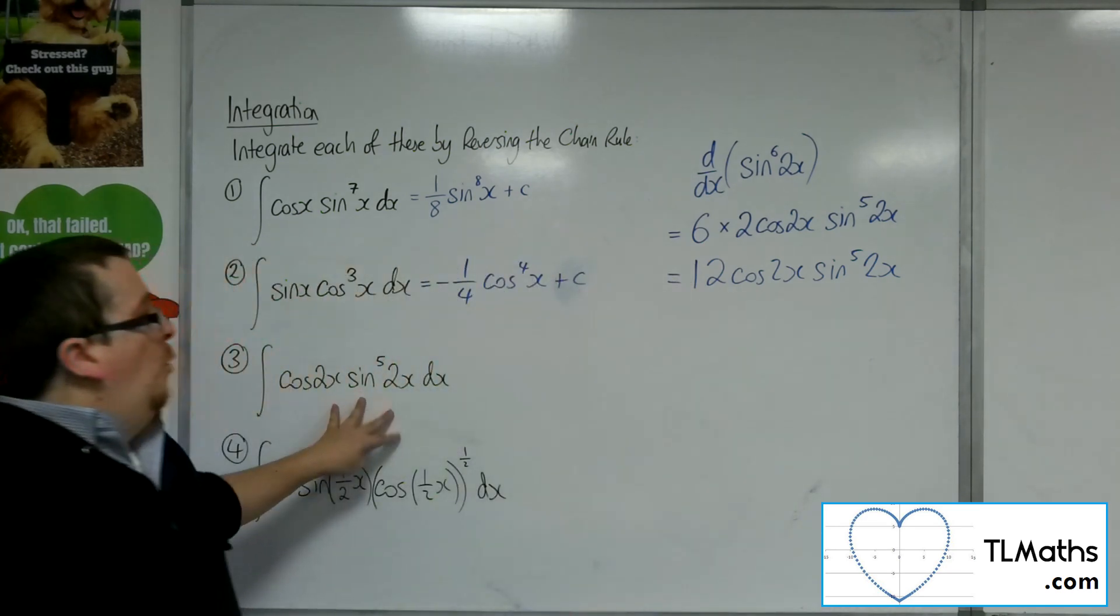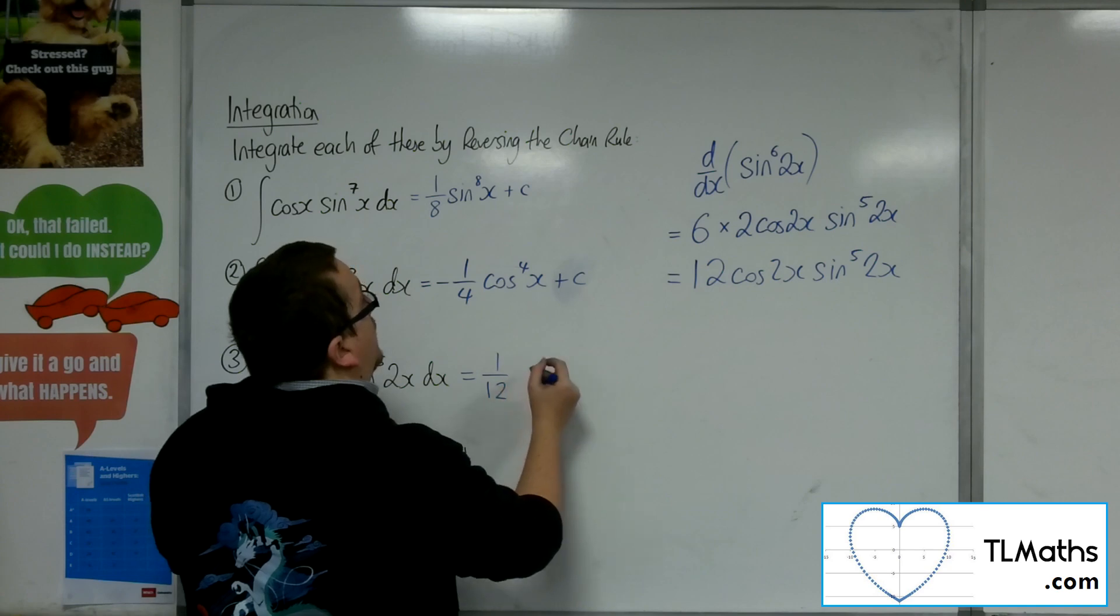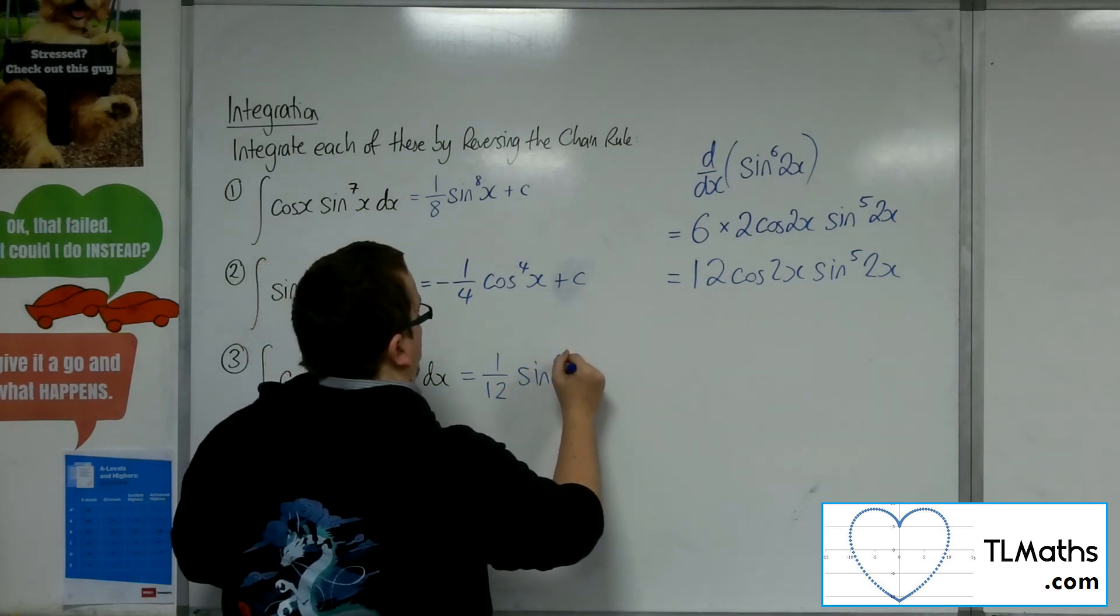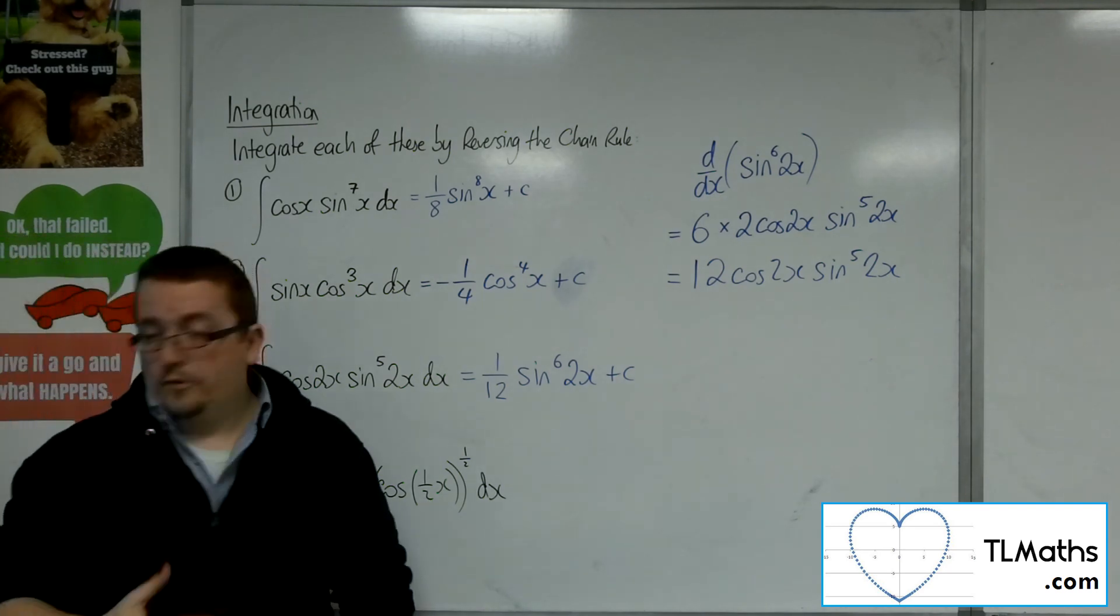So I've actually got 1 twelfth of what I need there. So that's 1 twelfth of sine to the 6, 2x, plus c. OK? That's number 3.